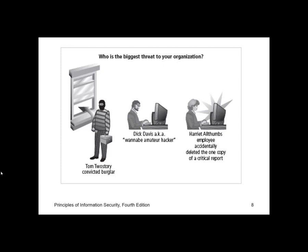Employees constitute one of the greatest threats to information security as the individuals closest to the organization's data. Employee mistakes can easily lead to revelation of classified data, entry of wrong data, accidental deletion or modification of data, storage of data in unprotected areas, and failure to protect information. Most of these mistakes are due to inexperienced employees, improper training, or making incorrect assumptions. Many threats can be prevented with controls ranging from simple procedures such as providing proper training and verifying activities by a second party.